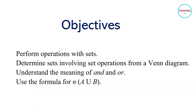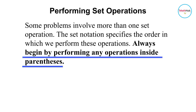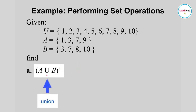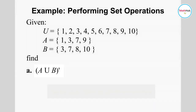In performing set operations, some problems might involve more than one set operation. The set notation specifies the order in which we perform these operations — always begin by performing any operations inside the parentheses. For instance, we have A union B inside parentheses and then a prime outside. This notation indicates complement and union, so we perform the union first, then get its complement.